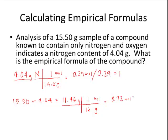Dividing gives us 1 for nitrogen and about 2.5 for oxygen. After dividing by the smallest number, those values go into the chemical formula: N₁O₂.₅. Since we can't have a fraction as a subscript, and this is a half, we multiply by 2 to get N₂O₅. A 2 to 5 ratio is the lowest ratio of elements in that compound, so N₂O₅ is the empirical formula.